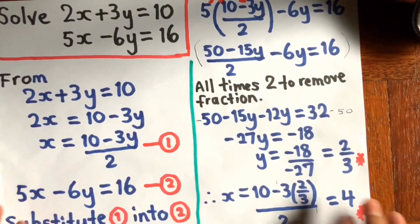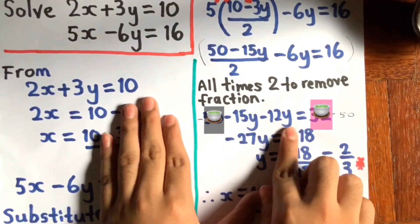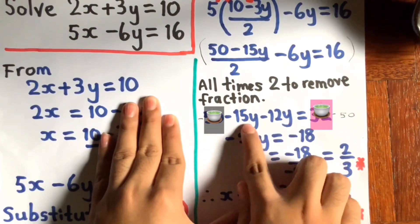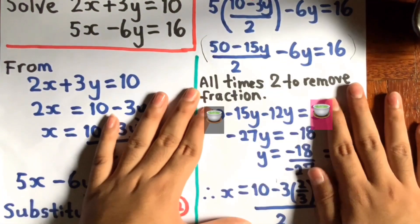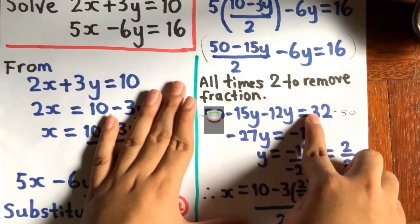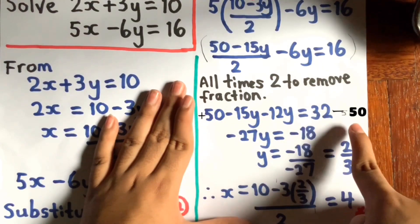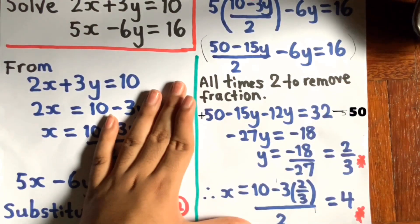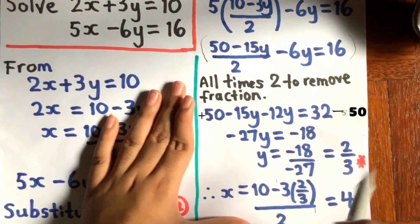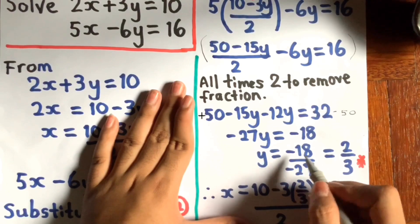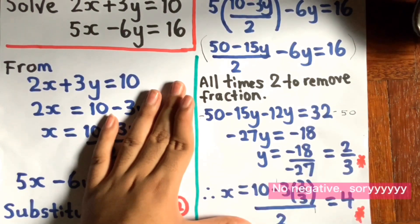So now to solve this equation, we collect like terms. Looking at 15y and 12y: combining them gives negative 27y. Then looking at the constants 50 and 32 — you move 50 to the other side, so positive 50 becomes negative 50, giving 32 minus 50 equals negative 18. So for y, you get negative 18 over negative 27. Simplifying this fraction gives y equals 2 over 3.